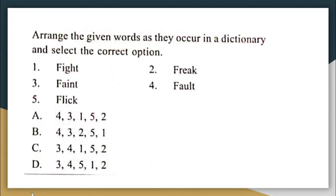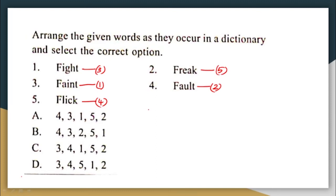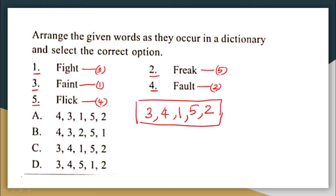Arrange the given words as they occur in a dictionary and select the correct answer. The word coming first in the dictionary is 'faint', second is 'fault', third is 'fight', fourth is 'flick', and fifth is 'freak'. The order in which the given words appear is: the third word given, followed by the fourth word, followed by the first word, followed by the fifth word, followed by the second word — giving the order 3, 4, 1, 5, 2. The correct answer is 34152, which is option C.